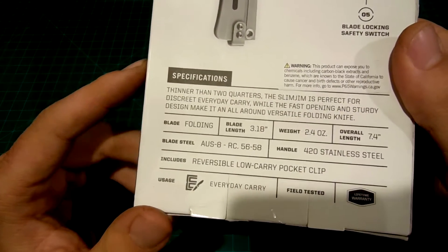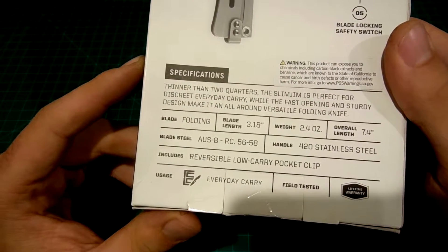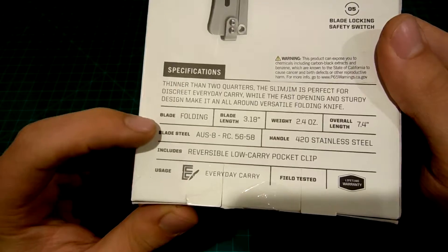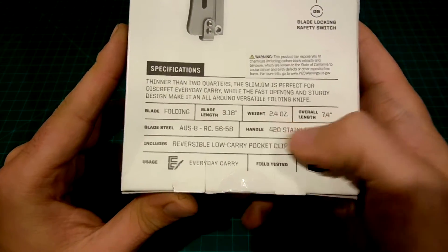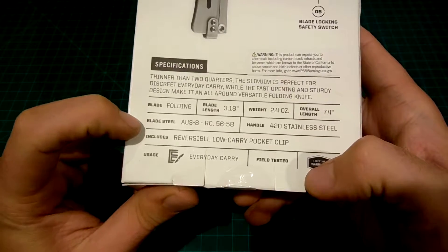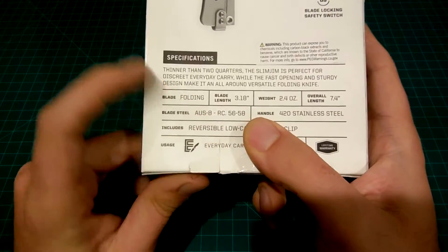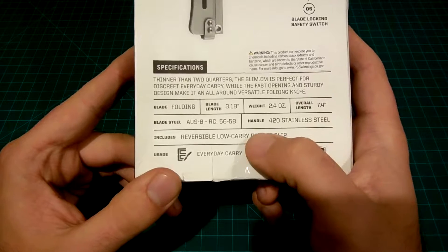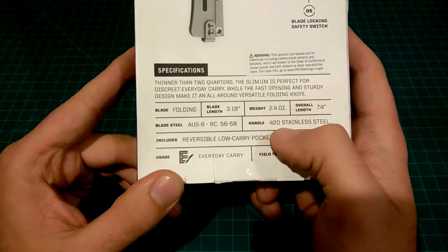Down here we have 'thinner than two quarters.' Slim Jim is perfect for discreet everyday carry while the fast opening and sturdy design make it an all-around versatile folding knife. The blade steel is AUS 8, which I think is pretty good.